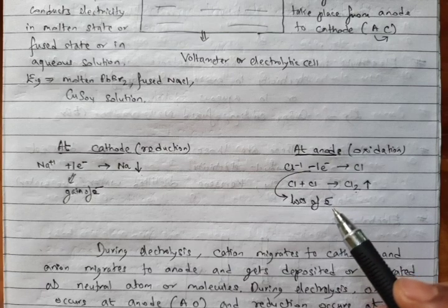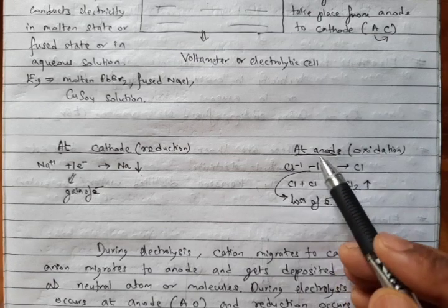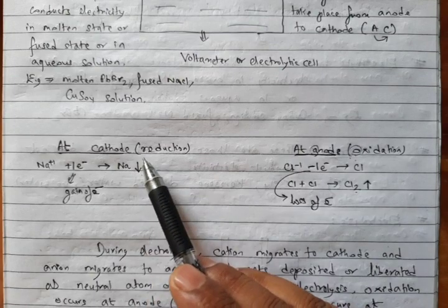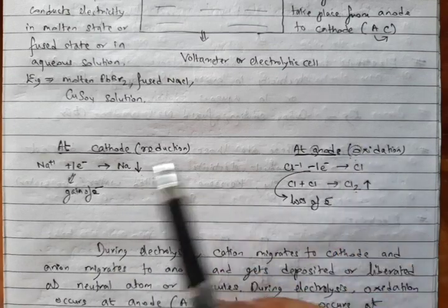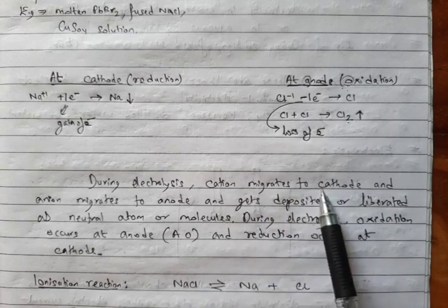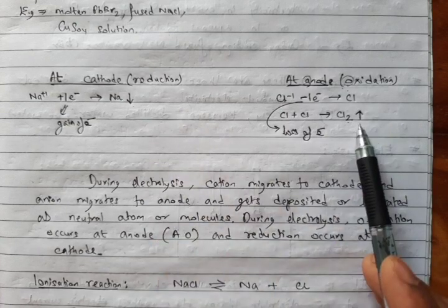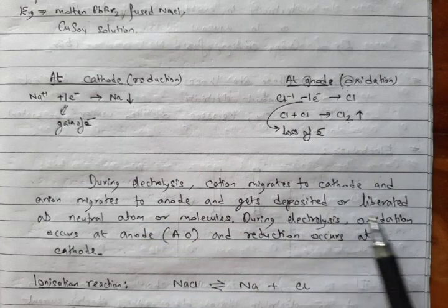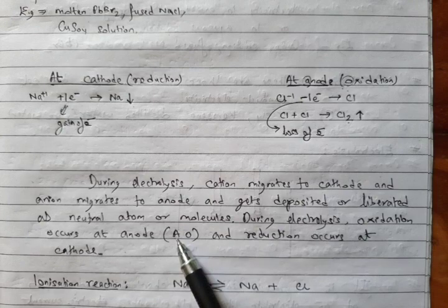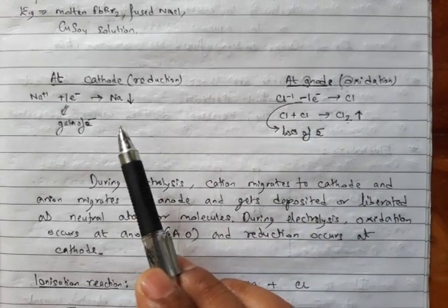So do remember: during electrolysis, C goes to C means cation migrates towards cathode, and A goes to A means anion migrates towards anode. After that they get deposited or liberated as neutral atoms or neutral molecules. Oxidation occurs at anode — the mnemonic AO: anode always oxidation — and reduction occurs at cathode.